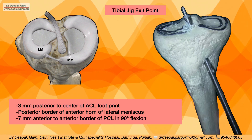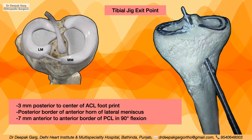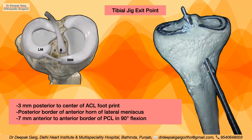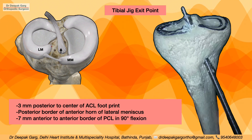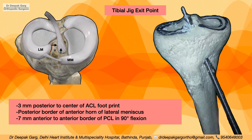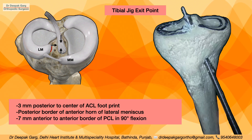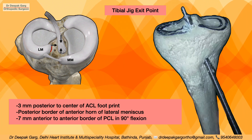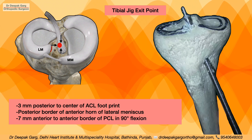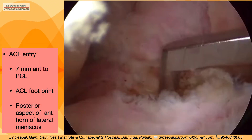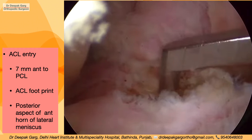The exit point inside the joint is approximately 3 mm posterior to the center of the ACL footprint. We identify the posterior border of the anterior horn of the lateral meniscus and stay posterior to it. The tip is also kept 7 mm anterior to the anterior border of the posterior cruciate ligament, with the knee in 90 degrees of flexion. These are the key landmarks used during arthroscopy for tibial tunnel placement.